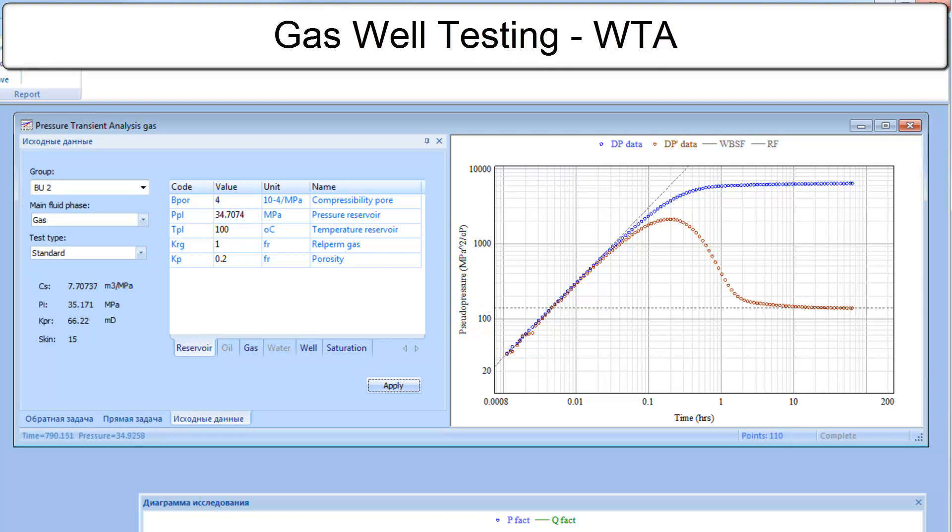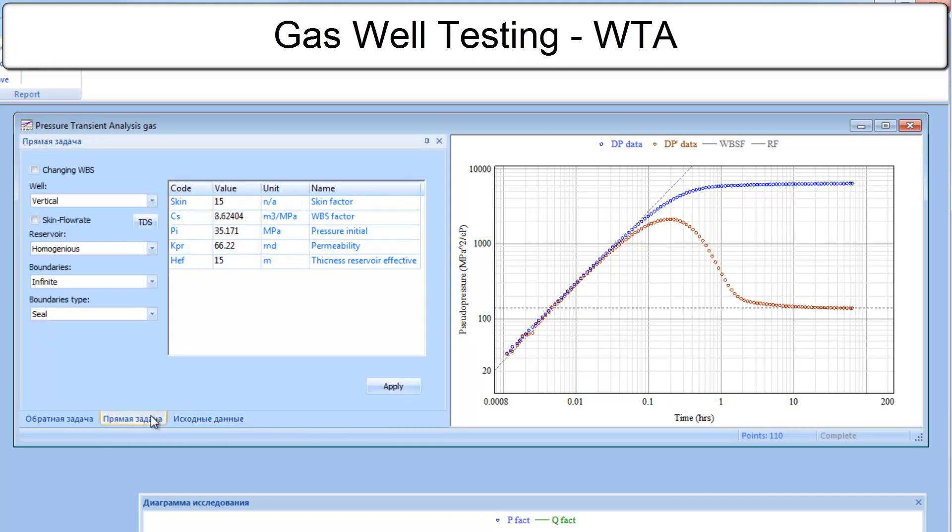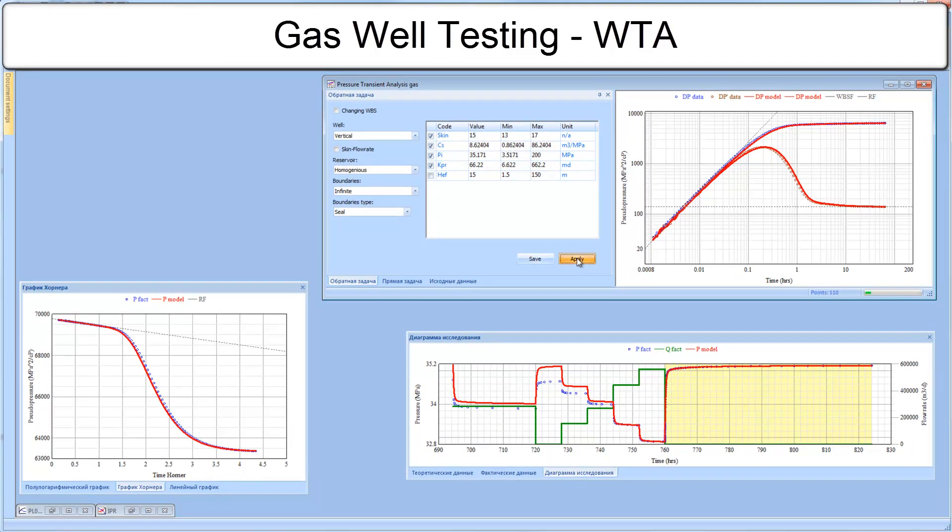We start interpretation with final pressure buildup. The derivative on diagnostic plot shows infinite acting reservoir. We position well bore stories and RF lines to what we think are correct places. Then we create an analytical model and improve the model for the best fit. The pressure match for the final buildup is okay, but for the previous flow periods the match is not very good. And this is due to the rate time dependent skin.